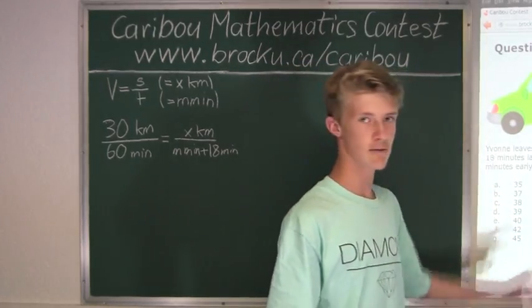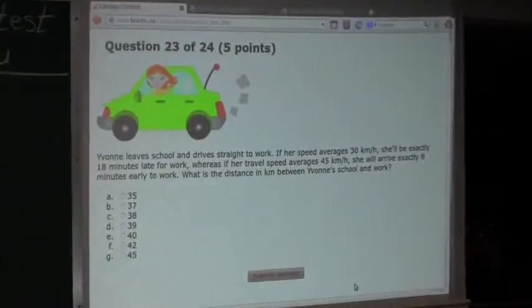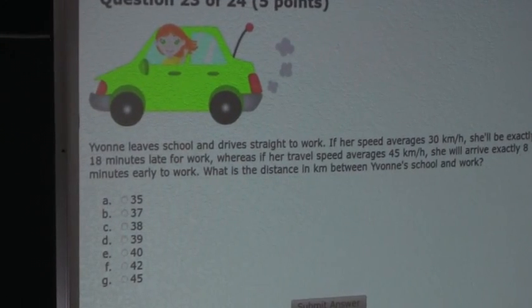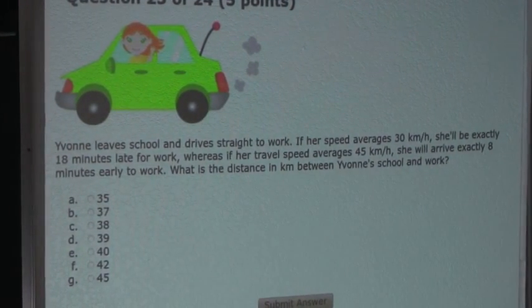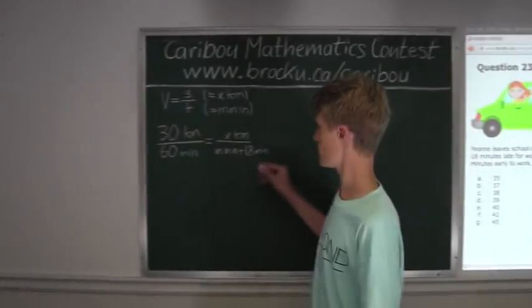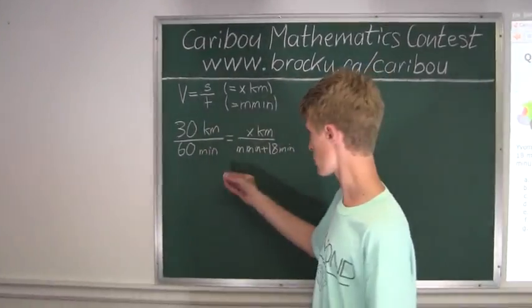And now the second bit of information that we will use is that it says that the speed average is 45 kilometers per hour, then she will arrive exactly 8 minutes early.